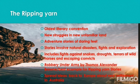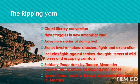The Ripping Yawn — meaning exciting or thrilling — is probably Australia's oldest literary convention. Writers in this genre express their new struggles in this unfamiliar and scary land. The Ripping Yawn tells tales of daring feats in a new and unknown place, and these are really adventure stories involving natural disasters, fights, and exploration. This includes dramatic events like fights against snakes, droughts, terrors of wild horses, escaping convicts, and clashes with Aboriginal people. The novel Robbery Under Arms, written by Thomas Alexander Browne, is the best example of a Ripping Yawn story. This literature was not only about developing the new Australian identity but also spreading ideas back to Europe about what this new settlement in Australia really meant.